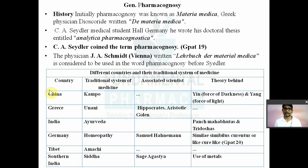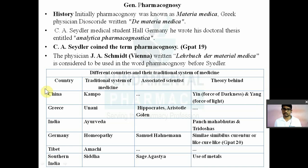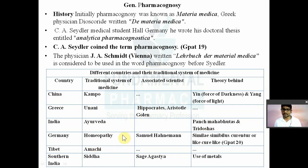Now we will see different countries and their traditional systems of medicine — the country, the traditional medicinal system, associated scientists, and the theory behind each system. China has the Kampo medicinal system, which is based upon balancing two forces: Yin and Yang. Yin is the force of darkness and Yang is the force of light. An imbalance between these two forces causes disease. For Greece, the traditional medicinal system is associated with Hippocrates, Aristotle, and Galen. India has the oldest traditional medicinal system — Ayurveda — based upon the Pancha Mahabhutas.